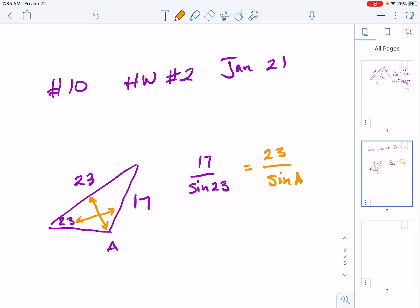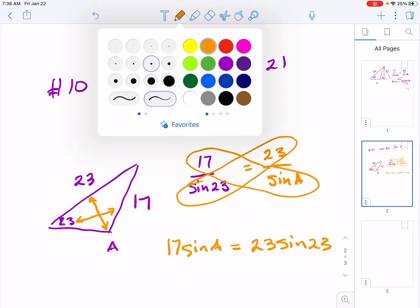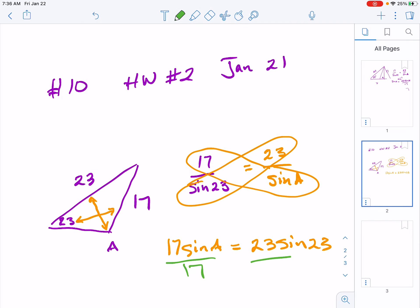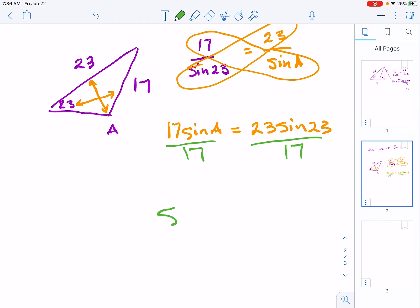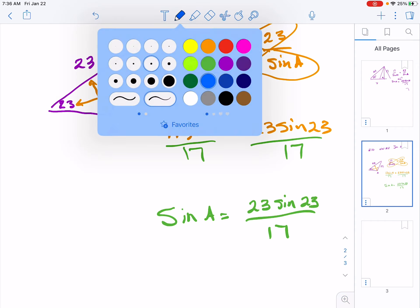...and we'll use this proportion, these two fractions, to figure out what angle A is. Well, if I cross multiply, so 17 sine A equals 23 sine 23. And I'm looking for A, so I'm going to divide both sides by 17. Okay, to get A by itself, we need to get rid of the sine next to it. So A is in the sine, you need to get it out, we're going to do that by doing the inverse sine on both sides of the equation.